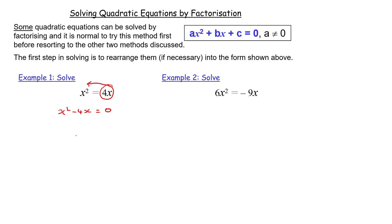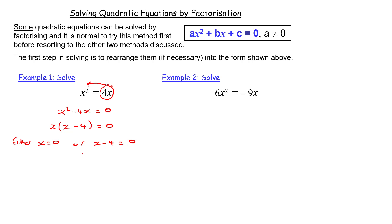I'm going to move the 4x over to the left-hand side. It's positive 4x on the right, so as it crosses the equals sign it becomes negative, leaving x squared minus 4x equals zero. Now I factorize the left-hand side — x is common to both terms — so I take x out: x times x minus 4 equals zero. For this to equal zero, either x equals zero, or x minus 4 equals zero, which means x equals 4.